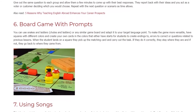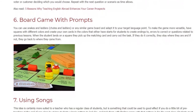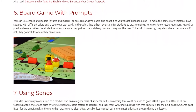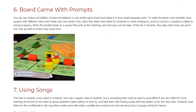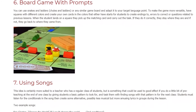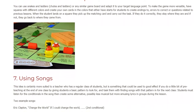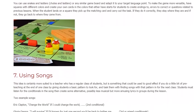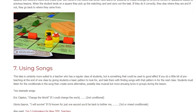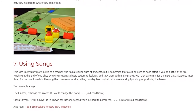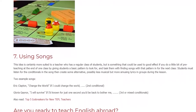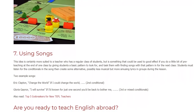6. Board Game with Prompts. You can use snakes and ladders or any similar game board and adapt it to your target language point. To make the game more versatile, have squares with different colors and create your own cards in the colors that either have starts for students to create endings to, errors to correct, or questions related to previous lessons. When the student lands on a square they pick up the matching card and carry out the task. If they do it correctly, they stay where they are; if not, they go back to where they came from.